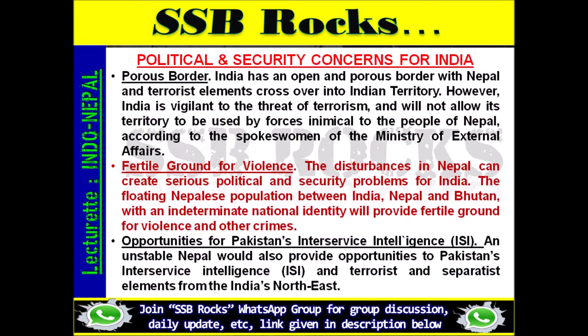Political and Security Concerns for India — Porous Border: India has an open and porous border with Nepal and terrorist elements cross over into Indian territory. India is vigilant to the threat of terrorism and will not allow its territory to be used by forces inimical to the people of Nepal, according to the spokesperson of the Ministry of External Affairs. The disturbances in Nepal can create serious political and security problems for India. The floating Nepalese population between India, Nepal and Bhutan with an indeterminate national identity will provide fertile ground for violence and other crimes.